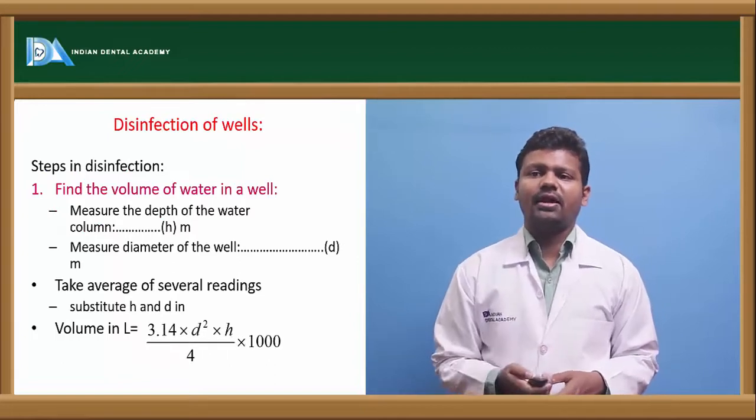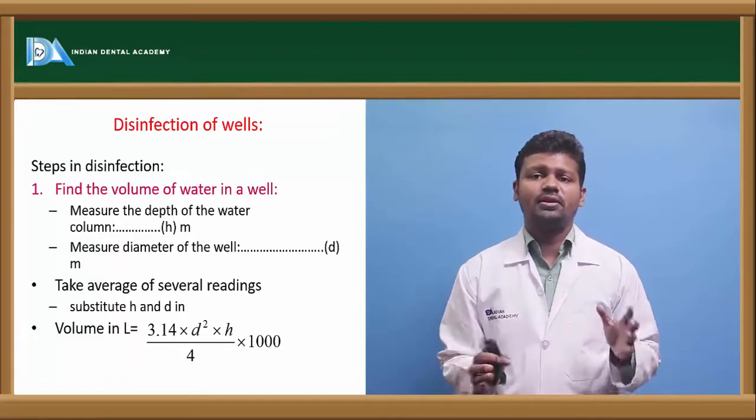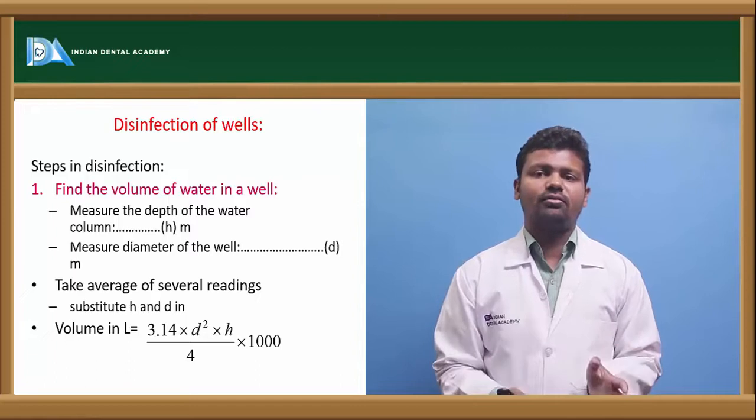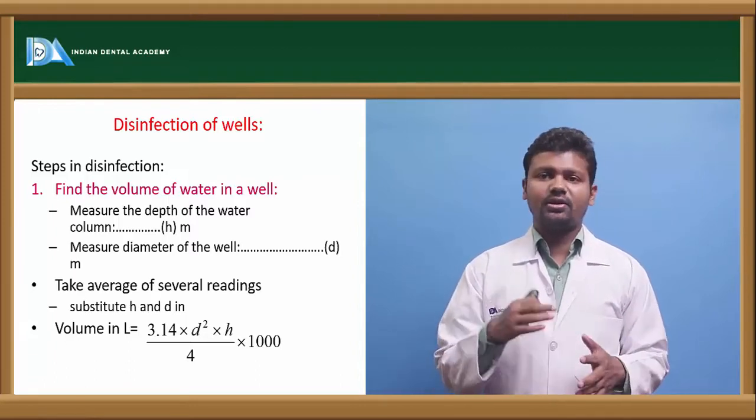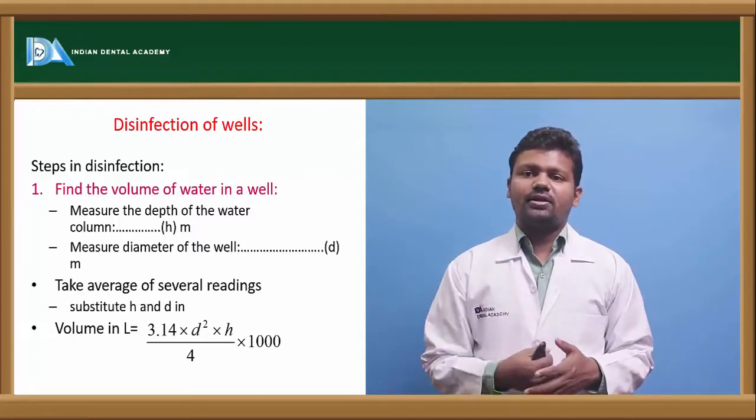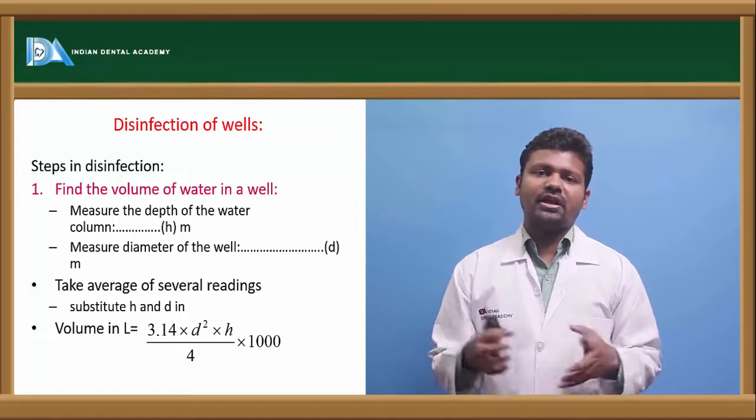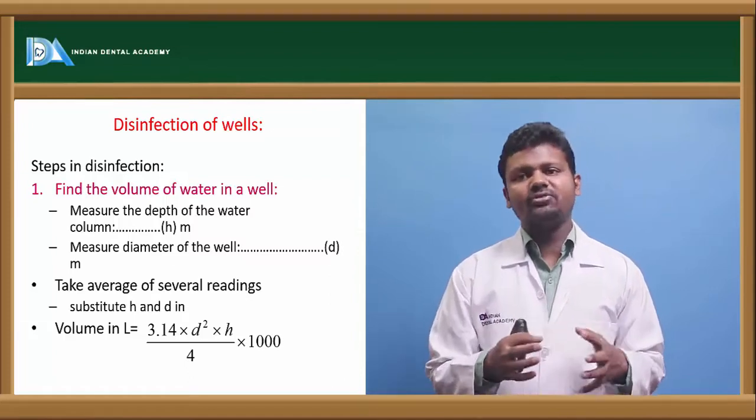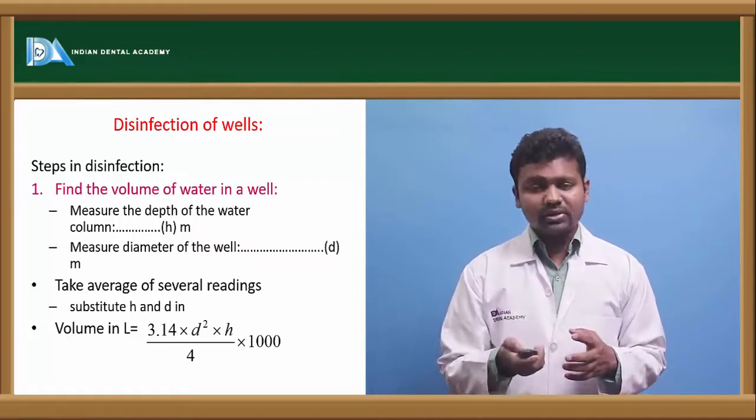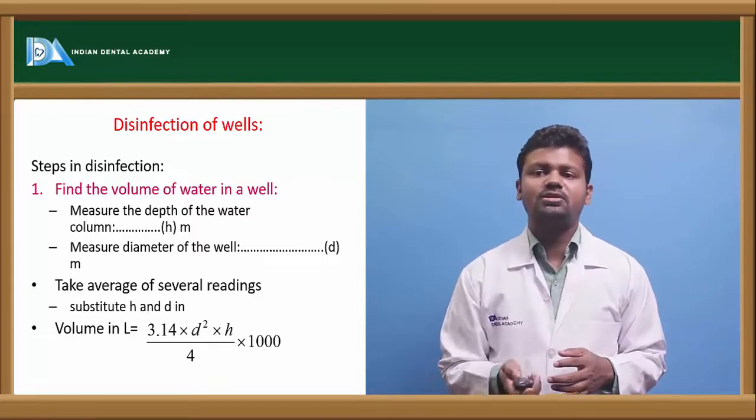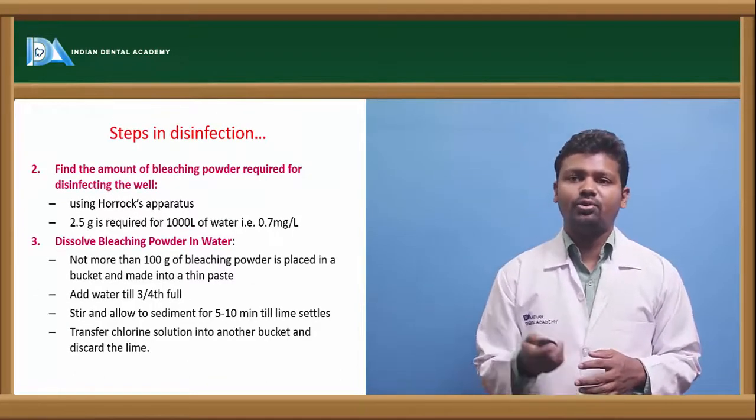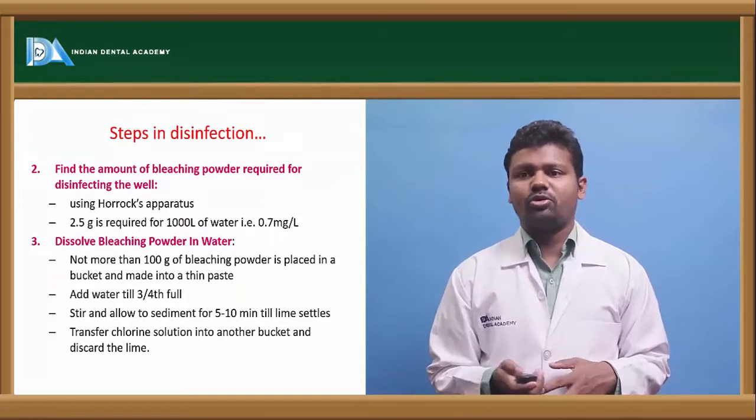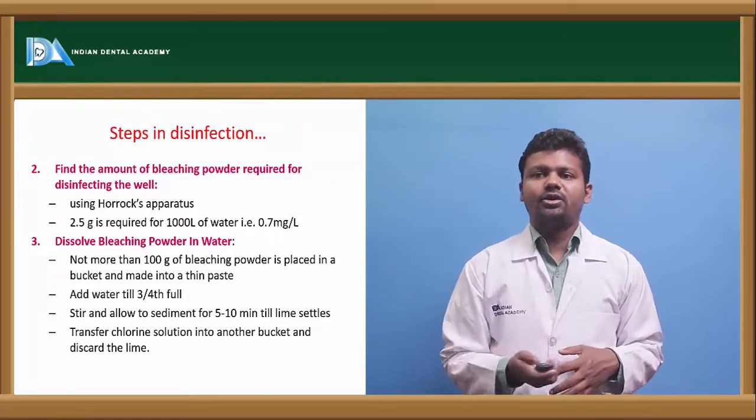Disinfection of well can be done by calculating. We have to measure the depth of the well and the radius of the well, then take the average of several readings. Whatever readings we take, the average of that reading is taken. Then by this formula we will get to know how much amount of bleaching powder should be added.